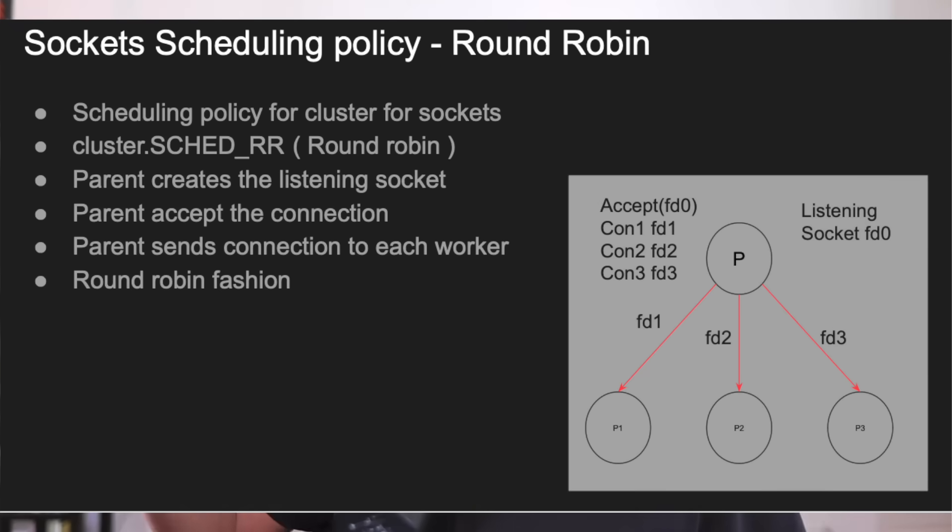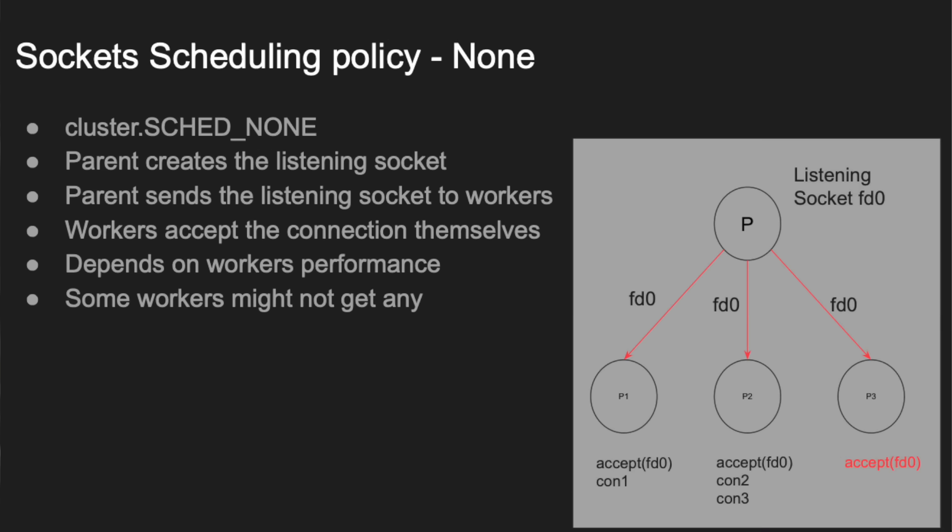Processes, threads, clusters — how to do socket management in Node.js with the cluster module such that you can distribute incoming connections to Node.js between different processes. What are the different scheduling policies? What's the difference between them? What is the most optimal approach, and what are the current limitations?